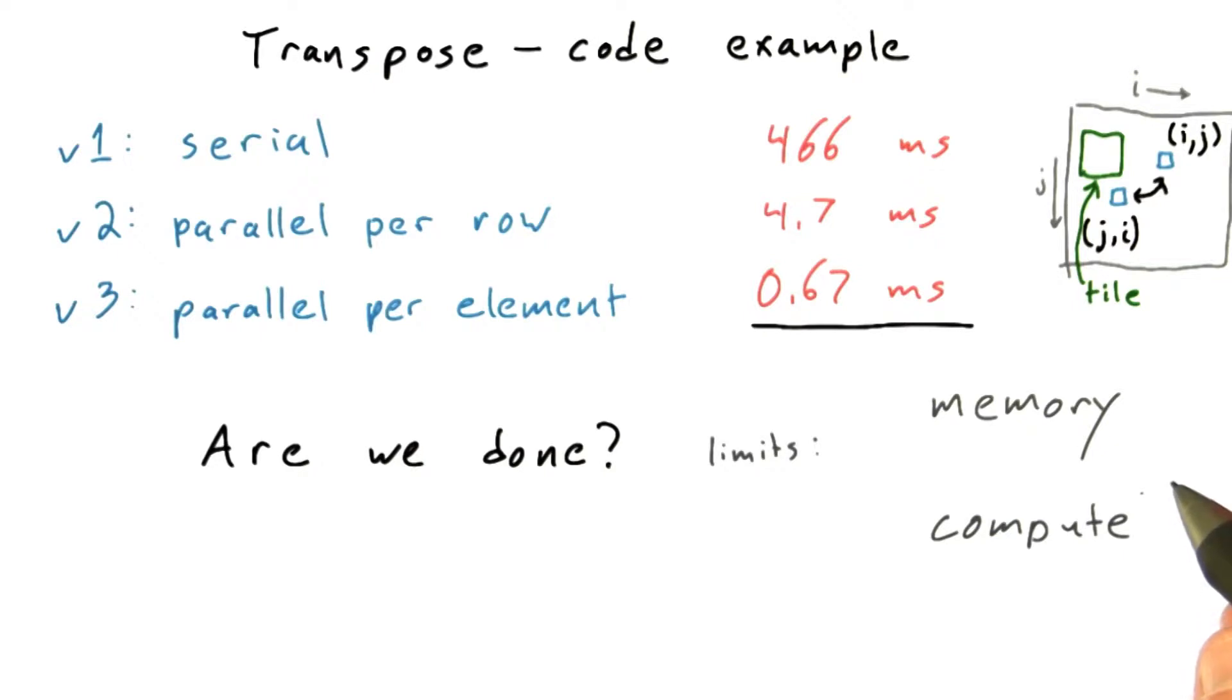Now the transpose code has almost no computation at all. It's entirely about moving data around. So let's ignore compute for the moment and focus on memory.